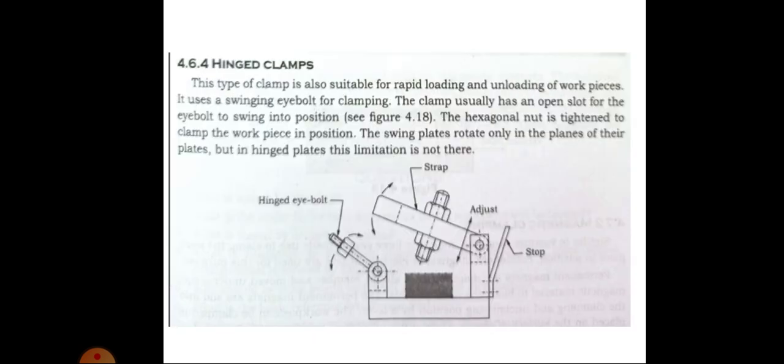Next one is hinged clamp. This type of clamp is also suitable for rapid loading and unloading of the workpieces. It uses a swinging eye bolt for clamping.